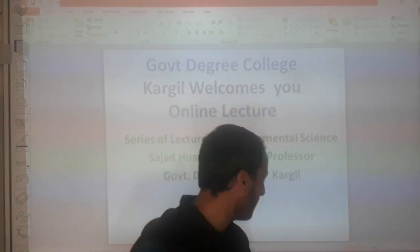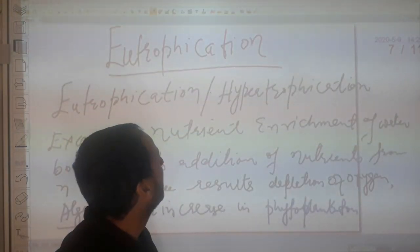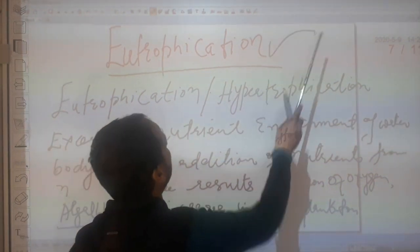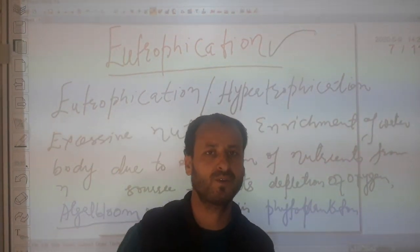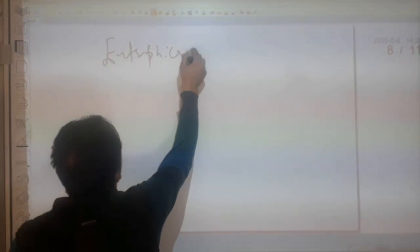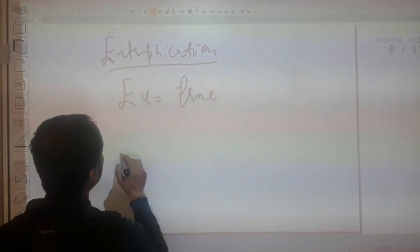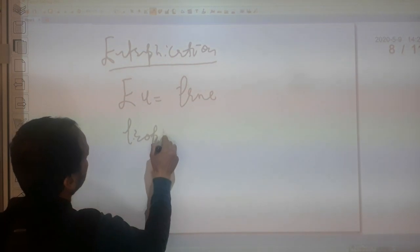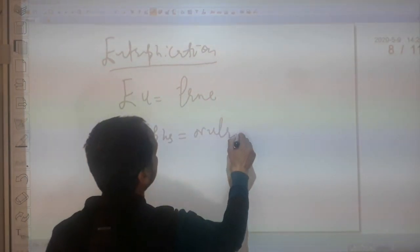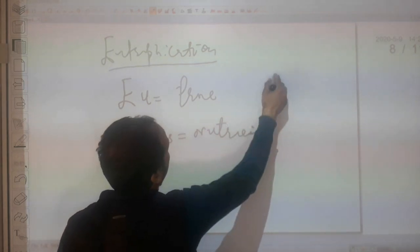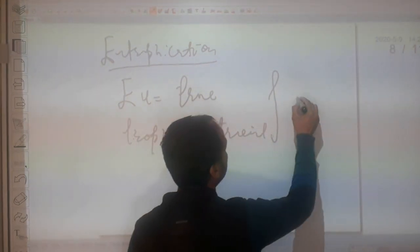So let us start. Today we are going to discuss about eutrophication. What actually does eutrophication mean? Eutrophication actually consists of two different words and is derived from Greek — 'eu' means true and 'trophe' means nutrient. Collectively we say 'truly nourished.'